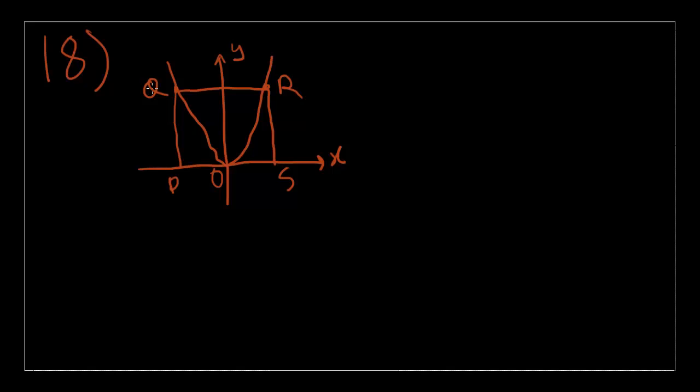So, in the figure above, PQRS is a square, so all of the sides are equal, and points Q, R, and O lie on the graph of Y equals AX squared, where A is a constant. If the area of the square is 64, what is the value of A?